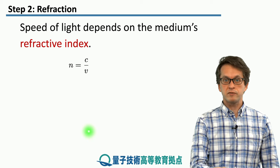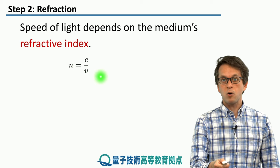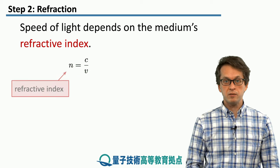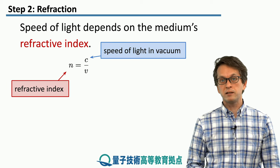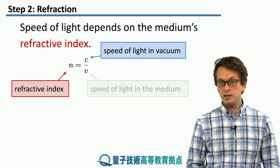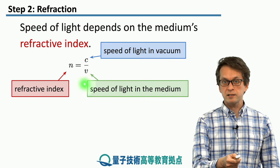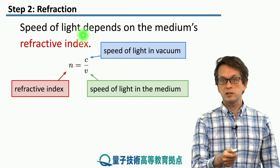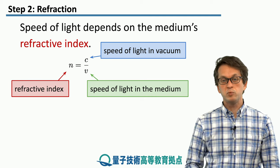Refractive index is defined as follows. We'll denote it as n, and it's given as c over v. So n is the refractive index, c is the speed of light in vacuum, and v is the speed of light in the medium. Really, what refractive index tells us is how much the speed of light changes in this new medium.